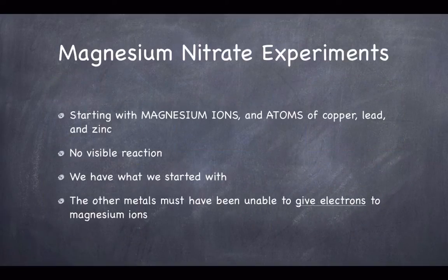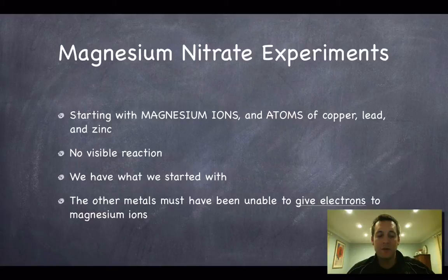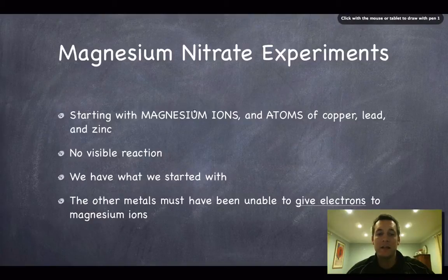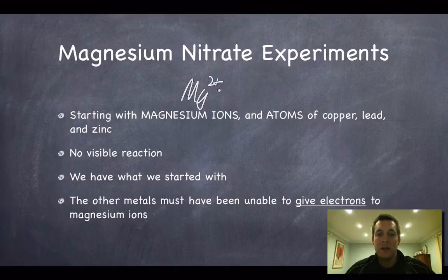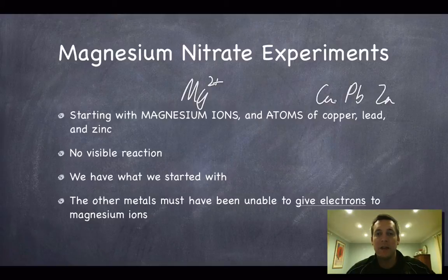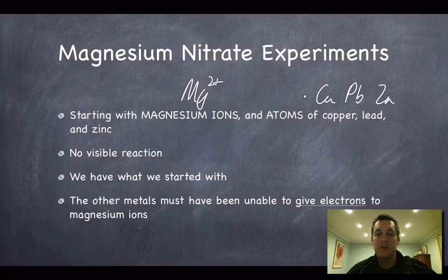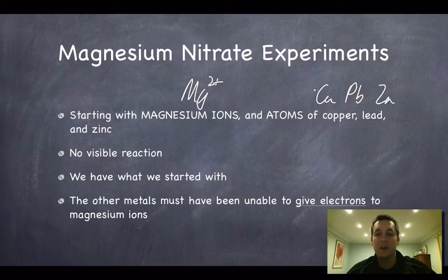In every case we're starting with magnesium ions (Mg²⁺) as part of the magnesium nitrate, and we've got atoms of copper, lead, and zinc. Magnesium 2+ is a charged ion that has lost two electrons, whereas copper, lead, and zinc are atoms that haven't lost any electrons. There's no visible reaction, meaning copper, lead, and zinc are unable to give their electrons to magnesium — they're not good enough reducing agents.